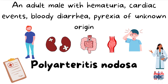If you see an adult male with hematuria, cardiac events such as myocardial infarction, bloody diarrhea, pyrexia of unknown origin, and other features like testicular pain and skin ulcers, you can suspect Polyarteritis nodosa as a possible diagnosis.